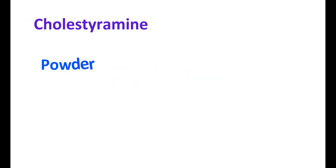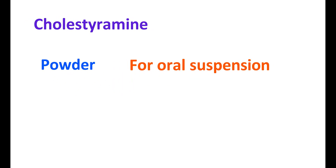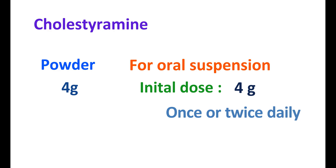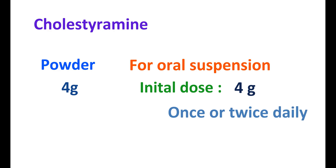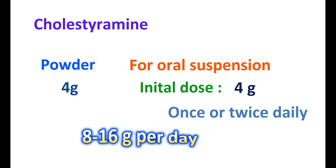Cholestyramine is available as a powder for oral suspension, and each sachet contains 4 grams of cholestyramine. The initial dose is 4 grams given once or twice daily. In people experiencing more constipation it should be started once daily. The maintenance dose is variable, ranging from 8 to 16 grams per day given in divided doses.